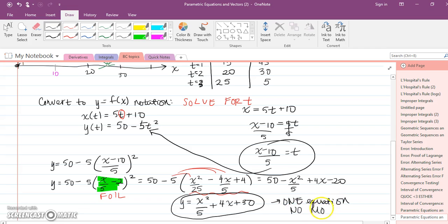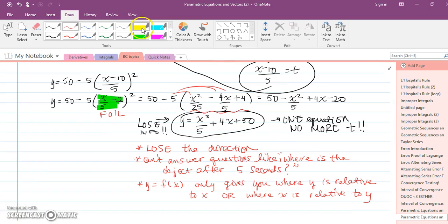Now you might be wondering, why don't we just go back to our old notation? Why do we need to split it up into parametrics? Because this is simpler. There's only one equation. The problem with this is if you just have it in your y equals f of x notation, you lose information.